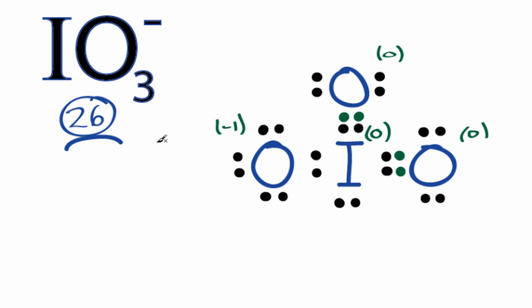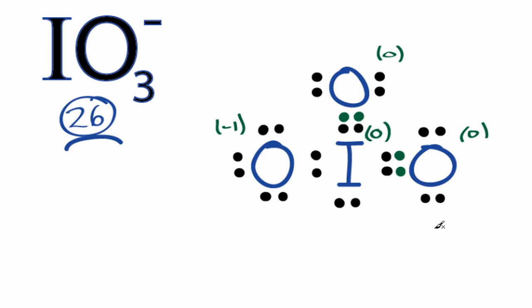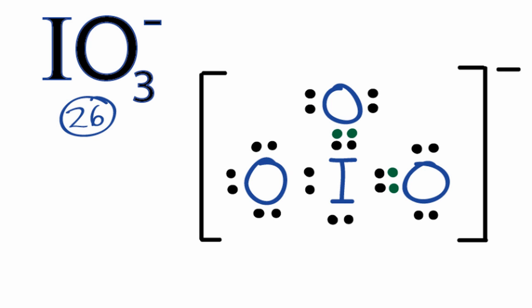We're still using 26 valence electrons, and each of the oxygen atoms has an octet. The iodine has more than eight, but that's okay because it can have an expanded octet. The formal charge for this entire structure is negative one, which makes sense — this is a negative ion. Because the formal charges are close to zero with this structure, this is the more likely Lewis structure for IO₃⁻. We do need to put brackets and a negative sign around the Lewis structure to show that it's a negative ion. And that's the Lewis structure for IO₃⁻. This is Dr. B — thanks for watching.